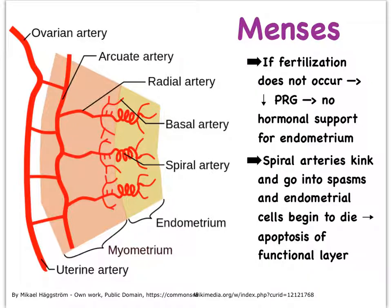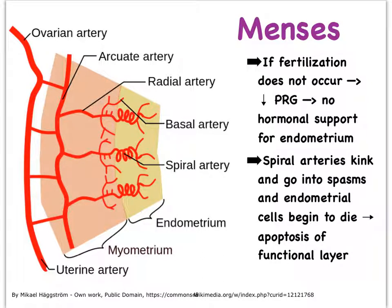Remember that when fertilization does not occur, the corpus luteum cannot continue to produce progesterone, and so there is nothing anymore that can help maintain the development of the endometrium, and so it needs to slough off. The uterus has the endometrium layer, the myometrium, and then the perimetrium. Within the endometrium, we have the stratum basale and the stratum functionalis, and it's the functionalis that sloughs off.